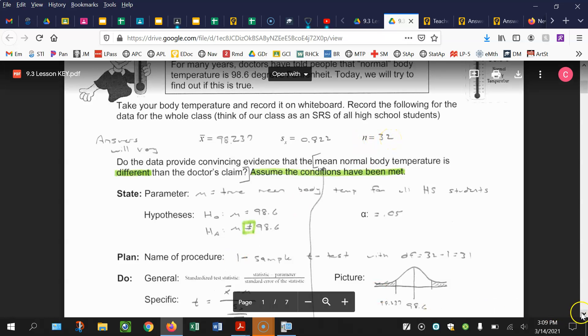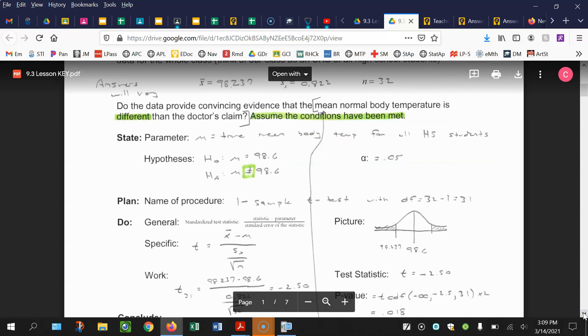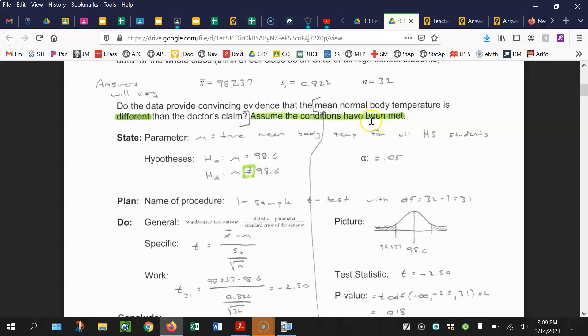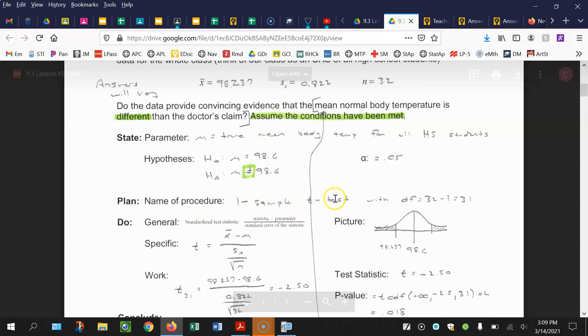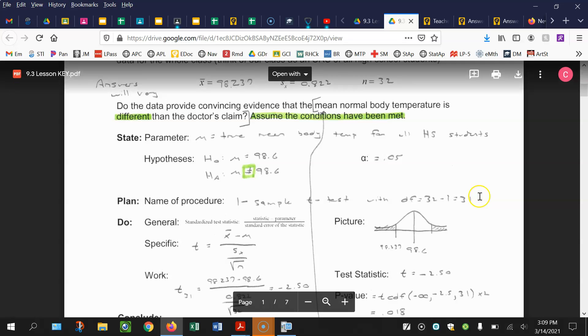So I just want you to fill this out as I go through the rest of this. The plan: you'll notice I've highlighted assume conditions have been met. Conditions have been met, we're going to do a one-sample t-test. The degrees of freedom, just like they were for the confidence interval, is your sample size minus 1, so 31 degrees of freedom.